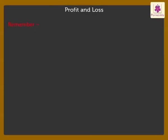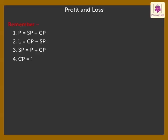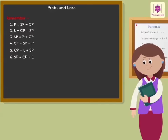Remember: 1. Profit or Gain = Selling Price minus Cost Price. 2. Loss = Cost Price minus Selling Price. 3. Selling Price = Profit plus Cost Price. 4. Cost Price = Selling Price minus Profit. 5. Cost Price = Loss plus Selling Price. 6. Selling Price = Cost Price minus Loss. Kids, now practice some problems on your own.